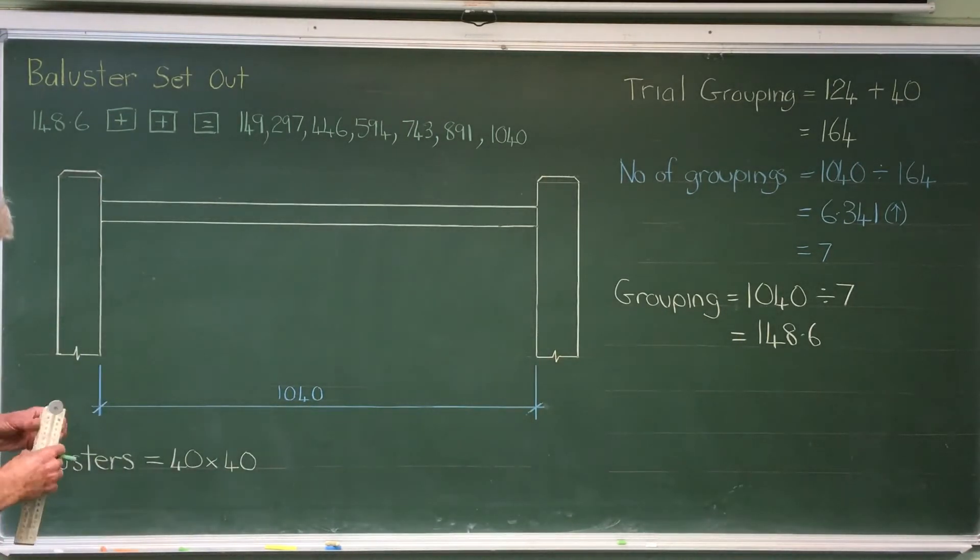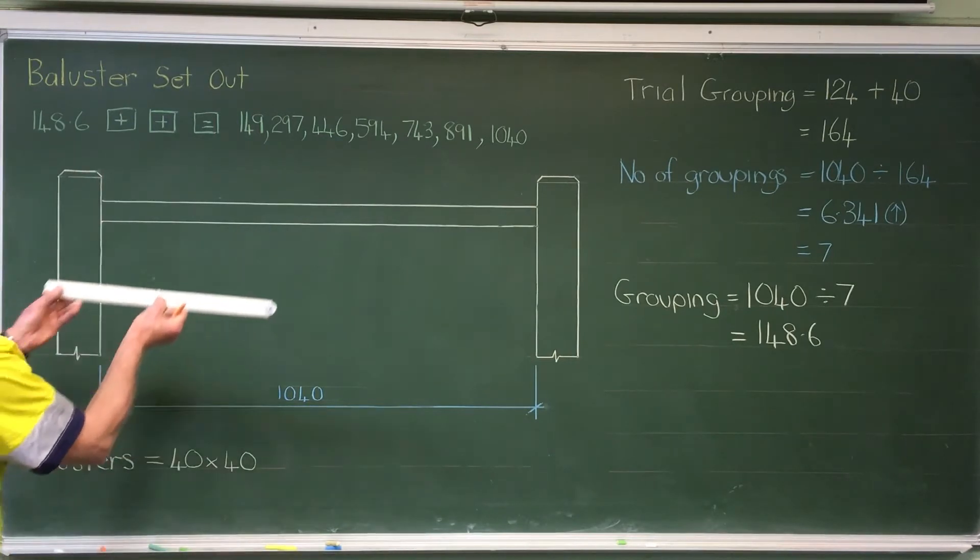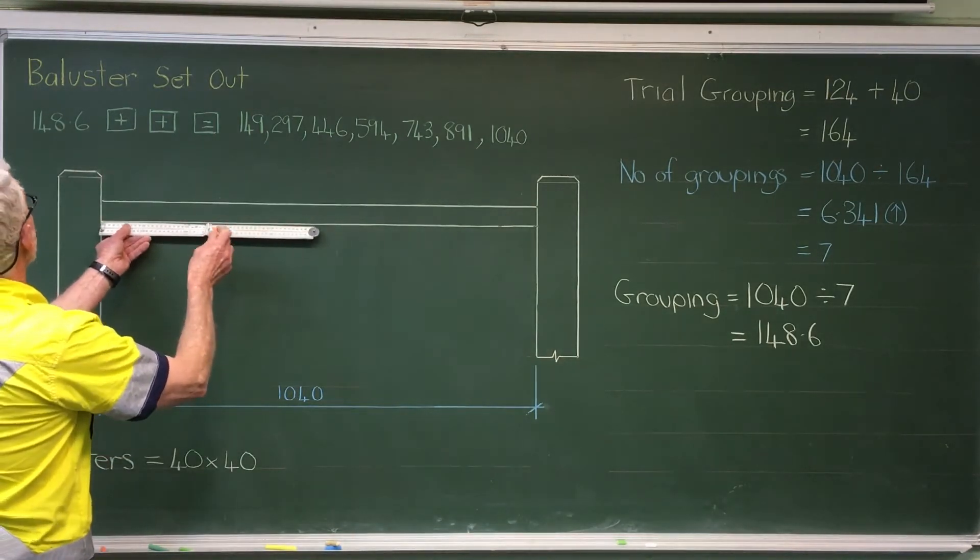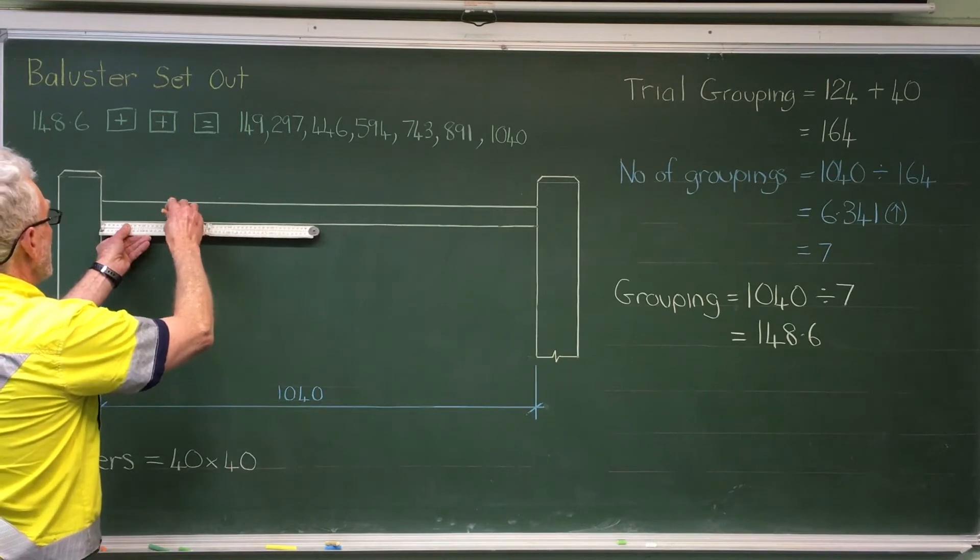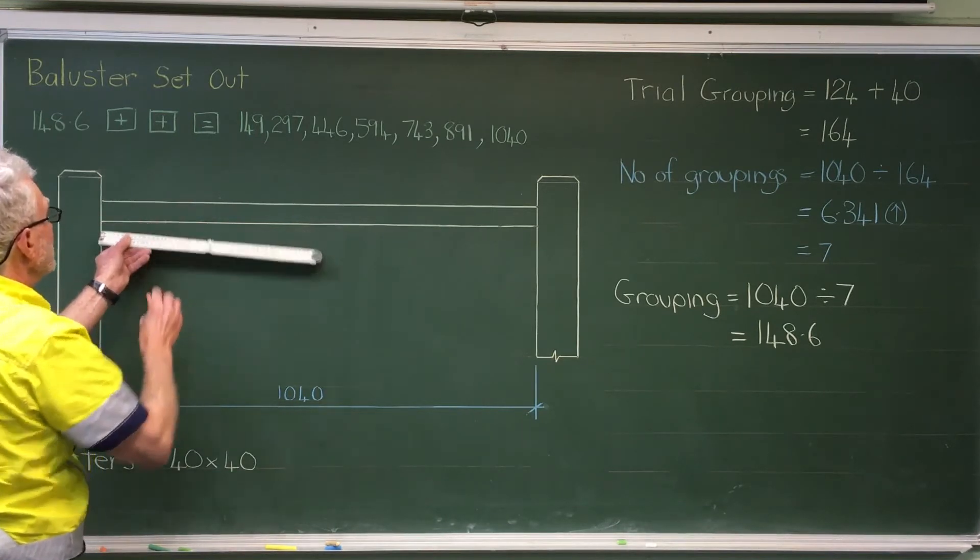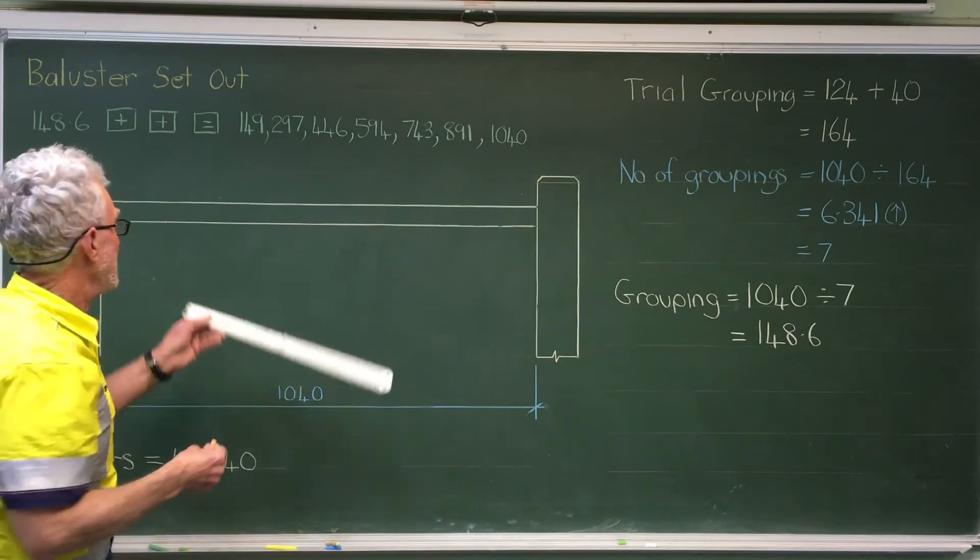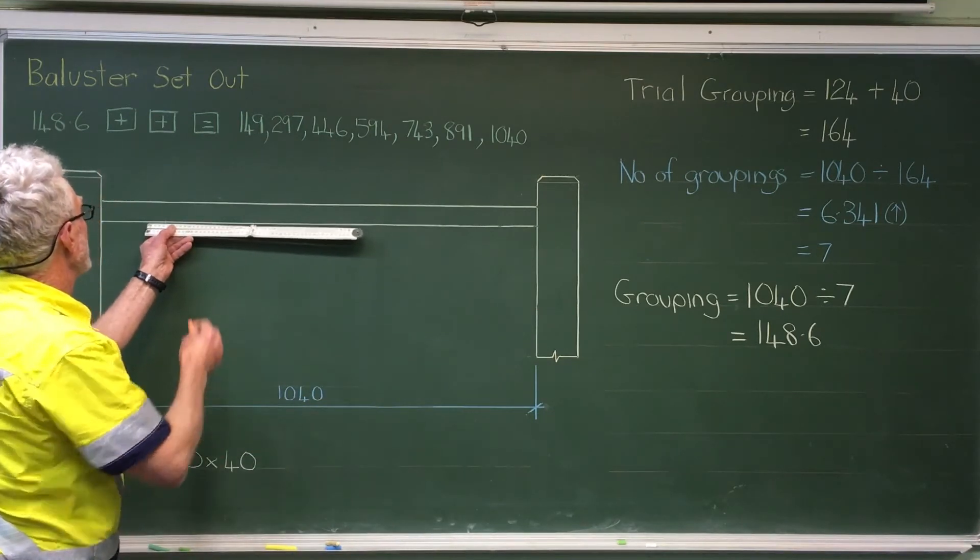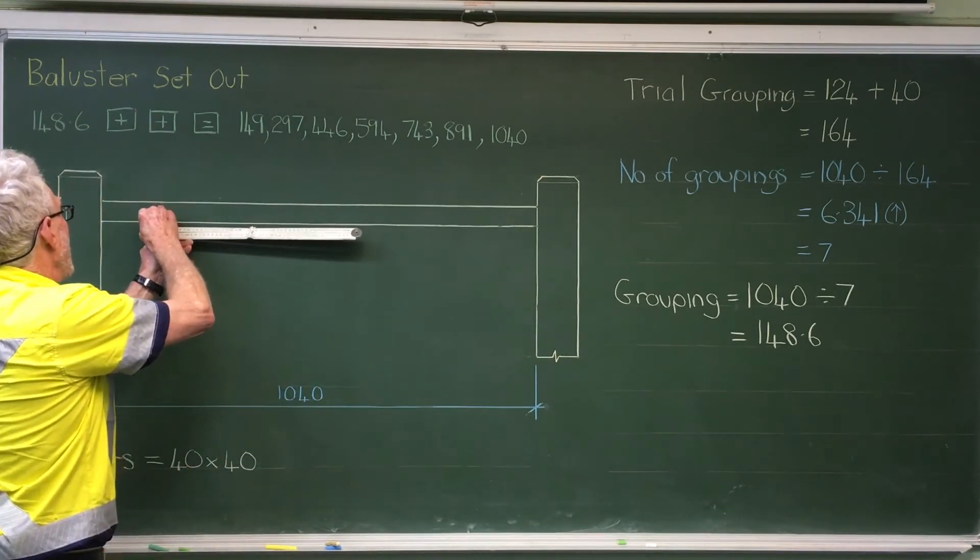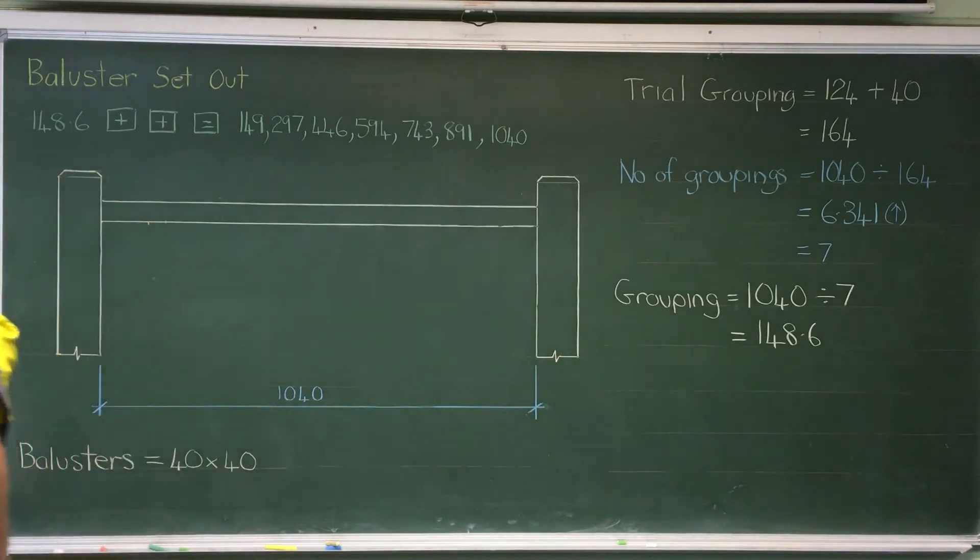So I'd take a rule. I'd measure the first one in at 149, just to there. That includes the baluster. So I'd have to come back 40mm. I could put that one in.